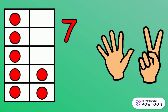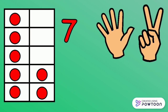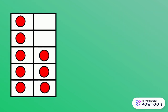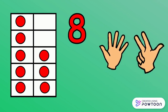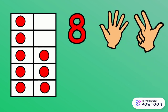7. We open five fingers and two fingers on the second hand. 7 equals 5 plus 2. 8. We open five fingers and three fingers on the second hand. 8 equals 5 plus 3.